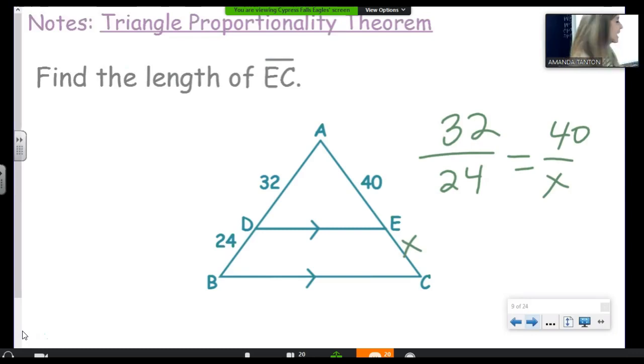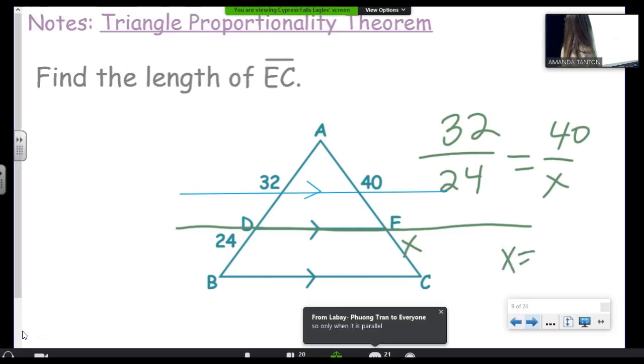Okay, so you see what this theorem allows us to do? It says, hey, DE for sure splits AB and AC proportionally because it's parallel. Does it make sense when we can use this theorem? Yes, acknowledge, Ms. Tanton. What's the answer? Okay, X is 30.